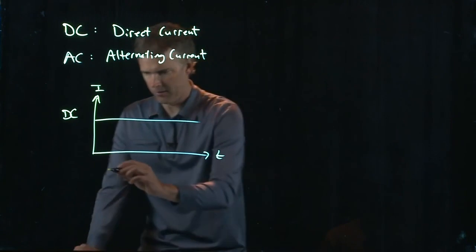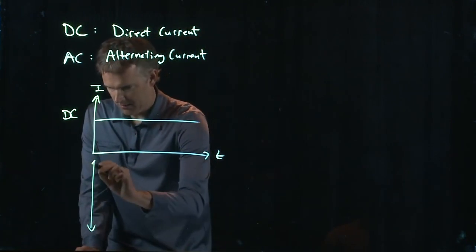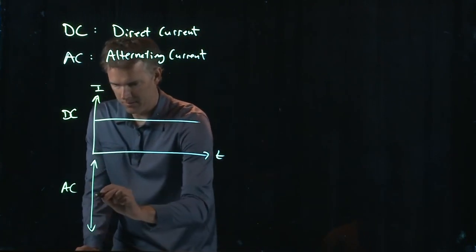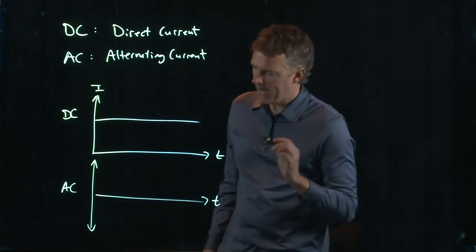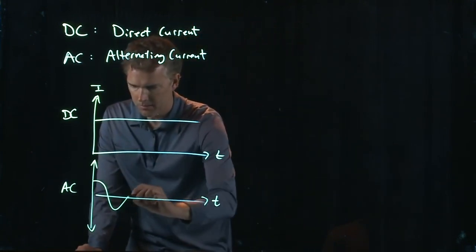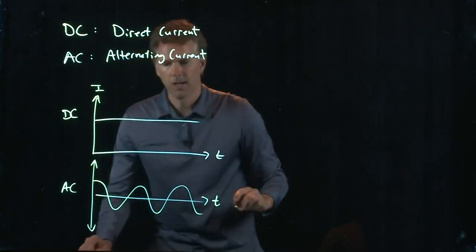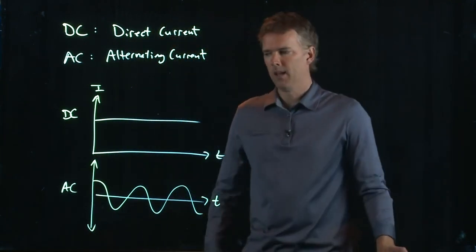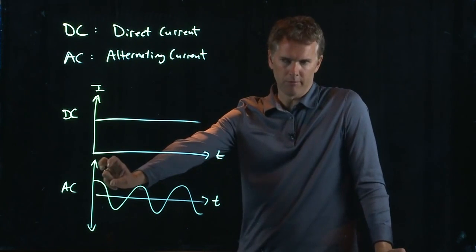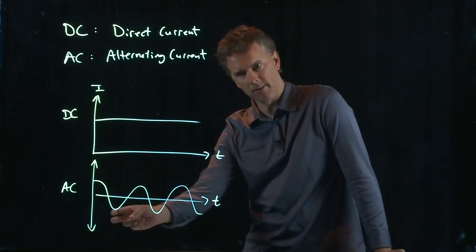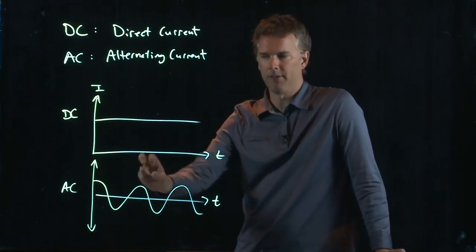AC current, of course, means that it alternates. So as a function of time, AC current looks like this. It's sort of sinusoidal. It's going positive for part of the time, and then it's going negative for part of the time, positive and then negative.